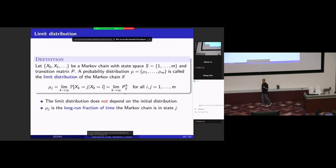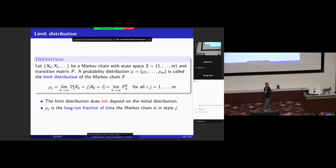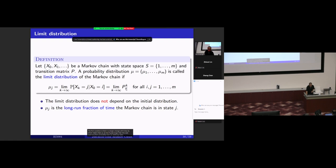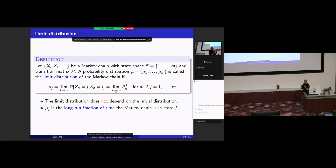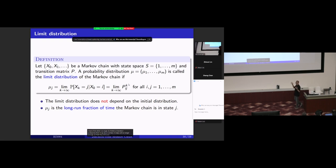For a distribution to be a limit distribution of a Markov chain, it must satisfy two conditions. First, it must no longer change with time — meaning as K grows large, the K-step transition probability from an arbitrary state i to j becomes independent of the initial state i. Second, there must be a limit: when K is large, the transition probability from i to j no longer changes so it converges to a limit. This limit is known as the limit distribution.